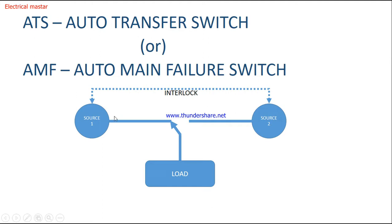Source 1 is the electricity board supply and source 2 is the diesel generator supply. When source 1 electricity is not available, it changes the load to source 2 automatically. Similarly, when source 1 supply comes back, it changes the supply back to source 1. For this purpose we use the ATS panel or AMF panel.